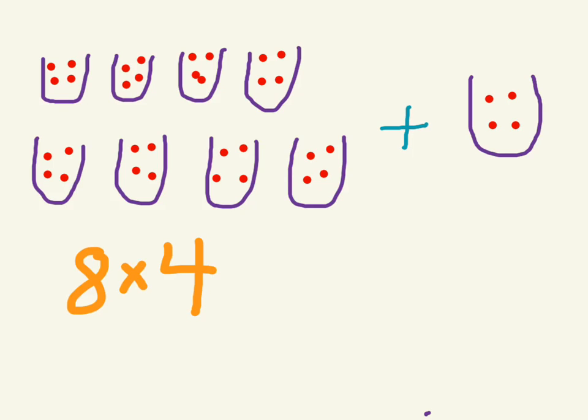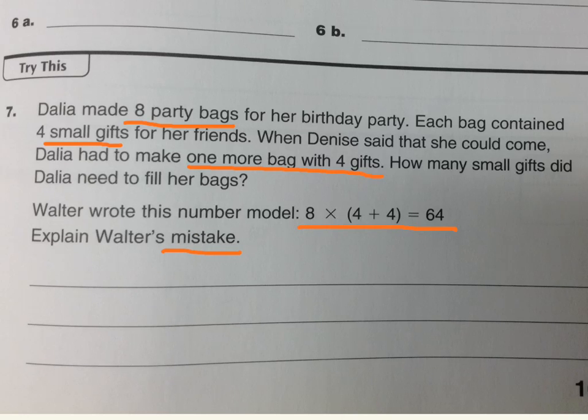So we have here 8 times 4, and then we're adding 4 more. And which part came first? That's where you would draw the parentheses, right? This was first. So that's where we put the parentheses. And then I think you can solve that on your own. And then explain why Walter's number model is incorrect. What was his mistake?